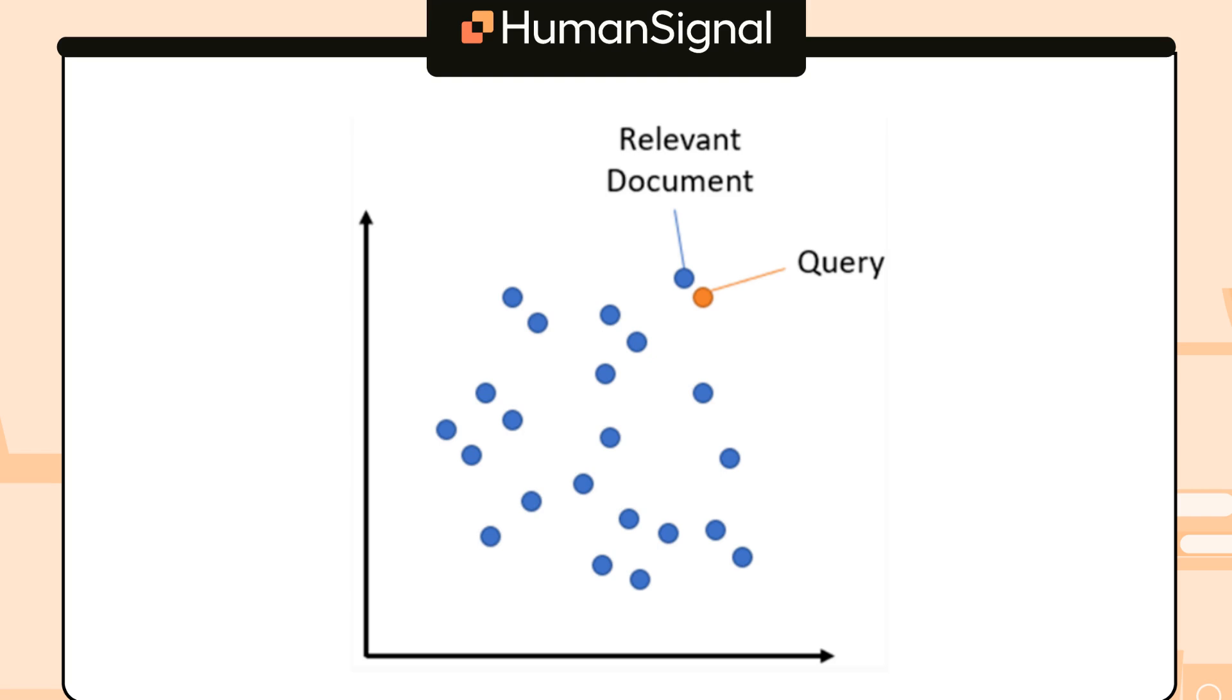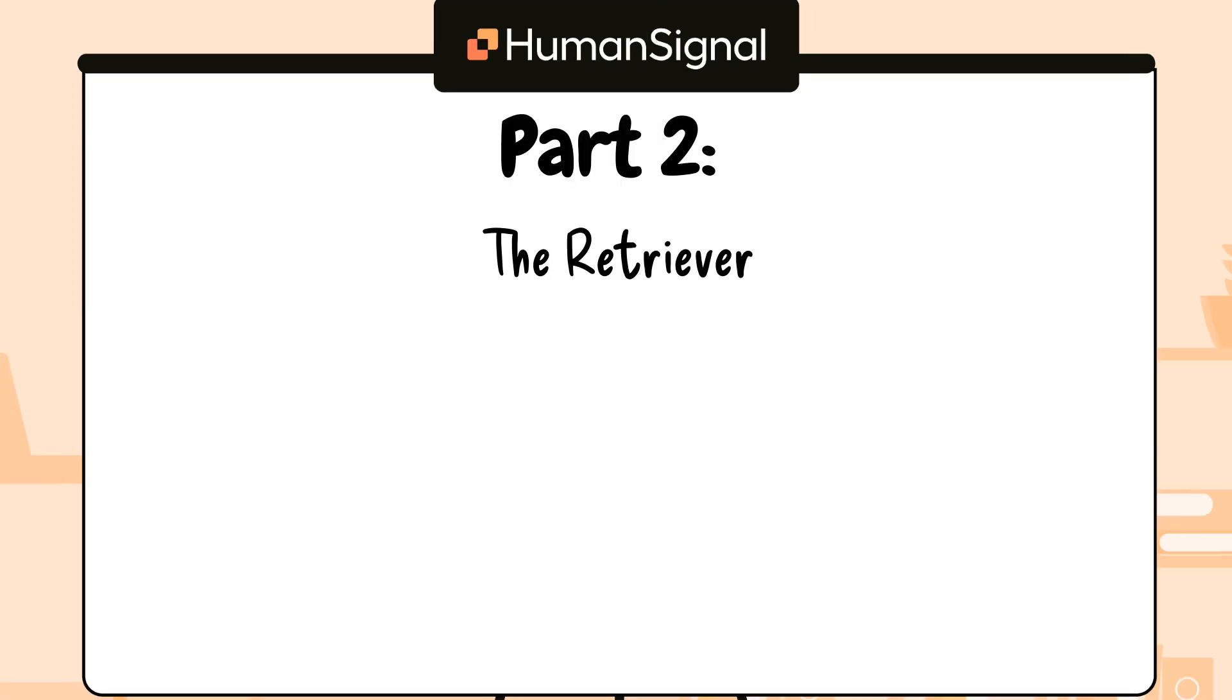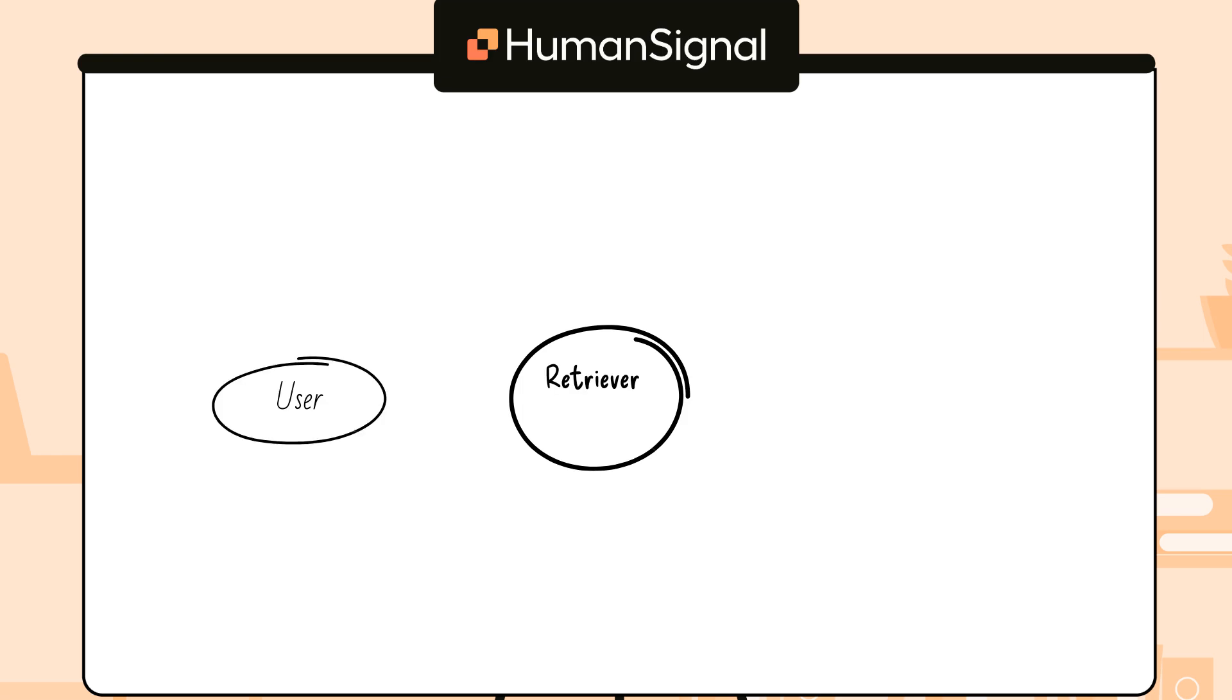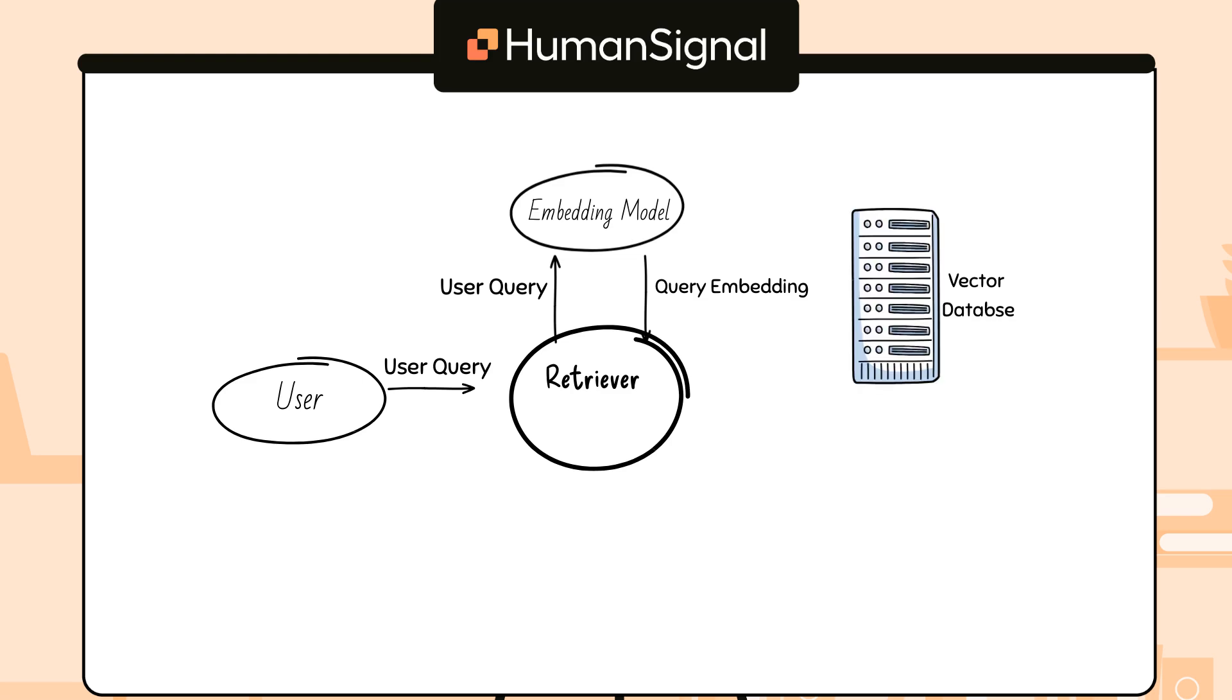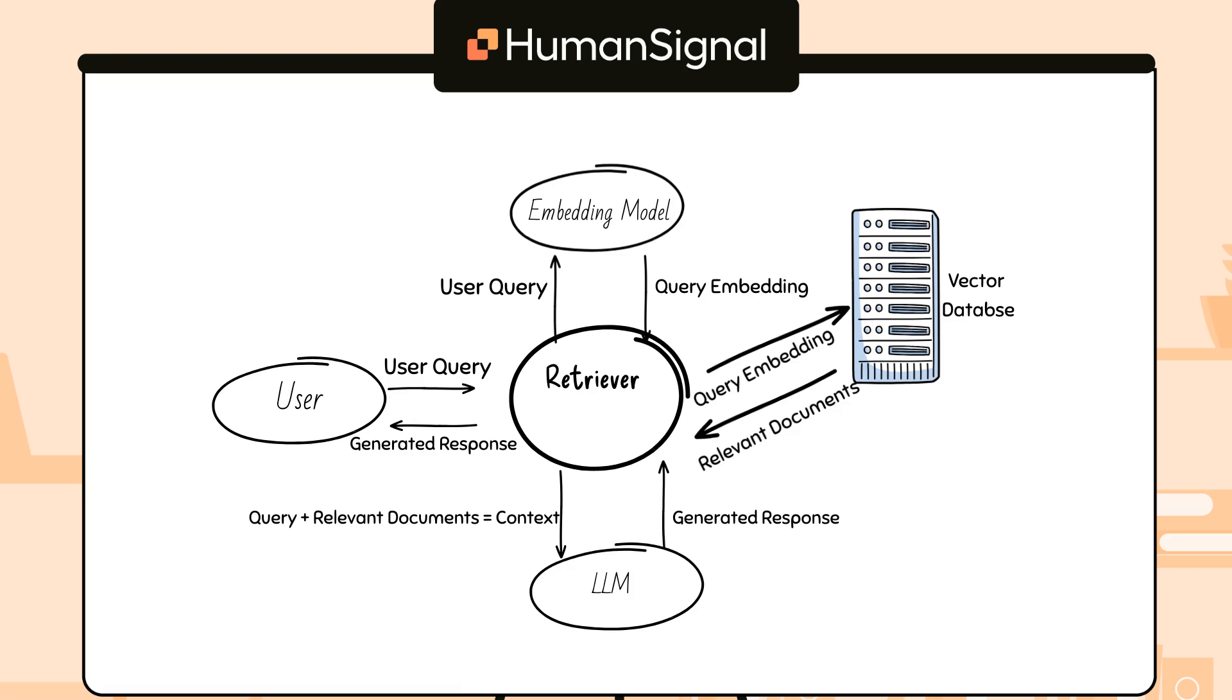The other big component of a RAG system is the retriever. The retriever's job is to be the link between the LLM and the knowledge base. Here's how it works. First, the user inputs a query, which is converted into embedding using an embedding model. Then, we query the knowledge base to find the documents with similar embeddings. Next, we take the most relevant chunks of these documents and add it to our context. Then, we send the original user query and the relevant document chunks to the LLM. The LLM can then use all of that information to generate its response, which is returned to the user.